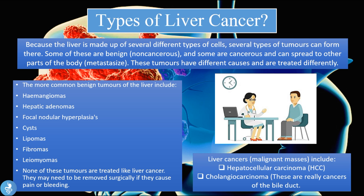The liver is made up of several different types of cells, so several different types of tumors can form there. Some of these are benign, meaning they are non-cancerous, and some of them are cancerous and can spread to other parts of the body, which means they metastasize. These tumors have different causes and are treated differently.